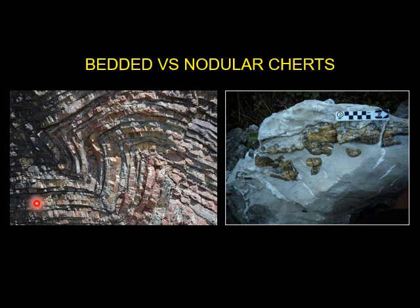This is a bedded chert, also folded. On the right side, the photo shows nodular cherts, and these are products of deep sea sedimentation.